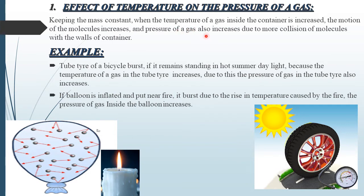The tube tire of a bicycle burst if it remains standing in hot summer daylight because the temperature of a gas in the tube tire increases. Due to this, the pressure of a gas in the tube tire also increases. Second, if balloon is inflated and put near fire, it burst due to the rise in temperature caused by the fire, the pressure of gas inside the balloon increases. Temperature increase hui, pressure barha aur balloon burst ho gaya.